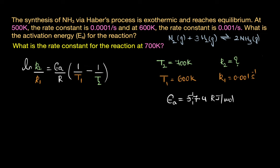By substituting these values into this equation, we get the final answer as K2 rate constant is approximately equal to 0.005 second inverse.